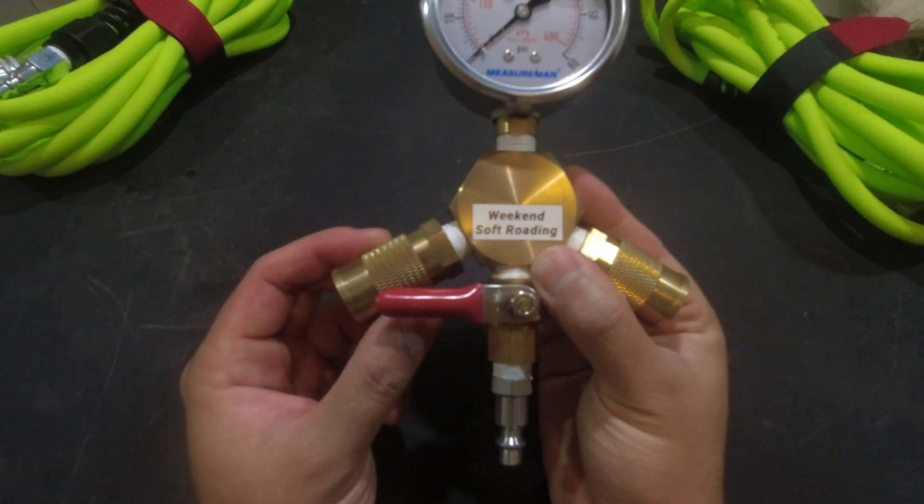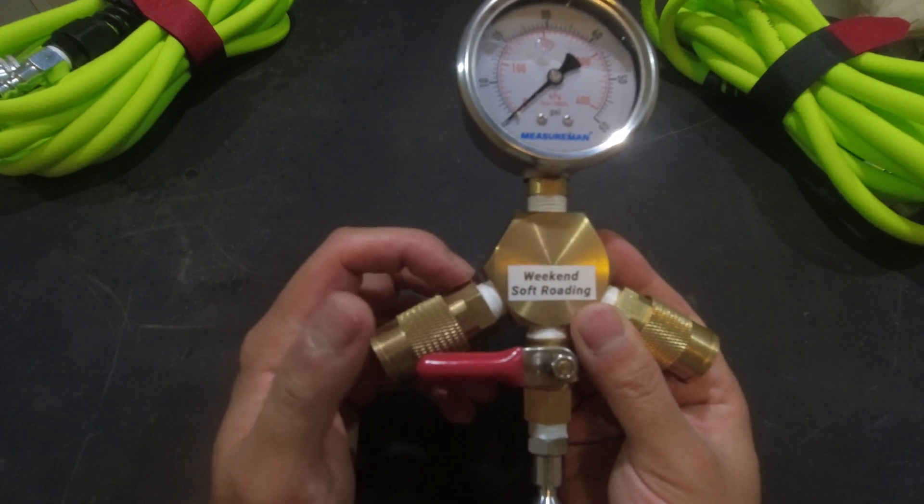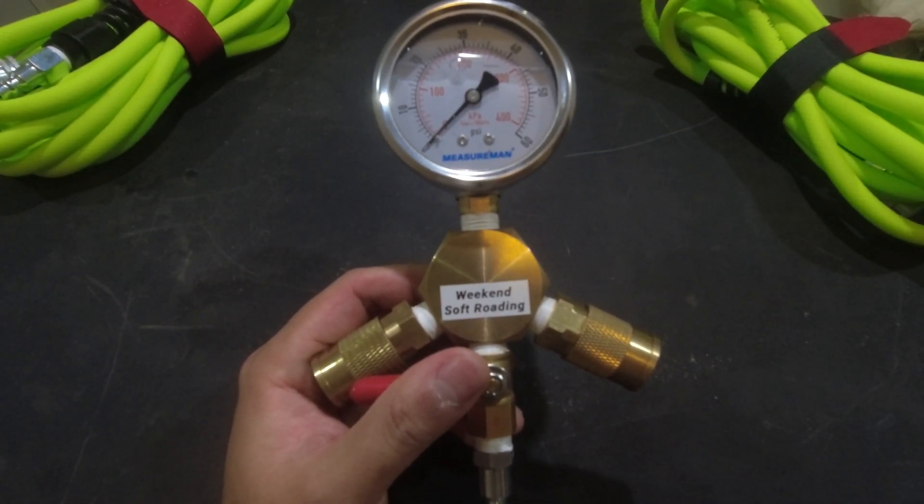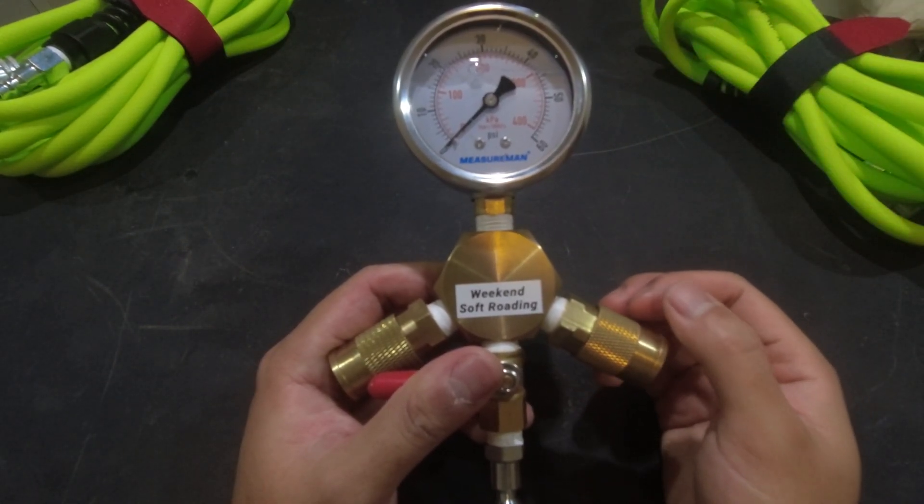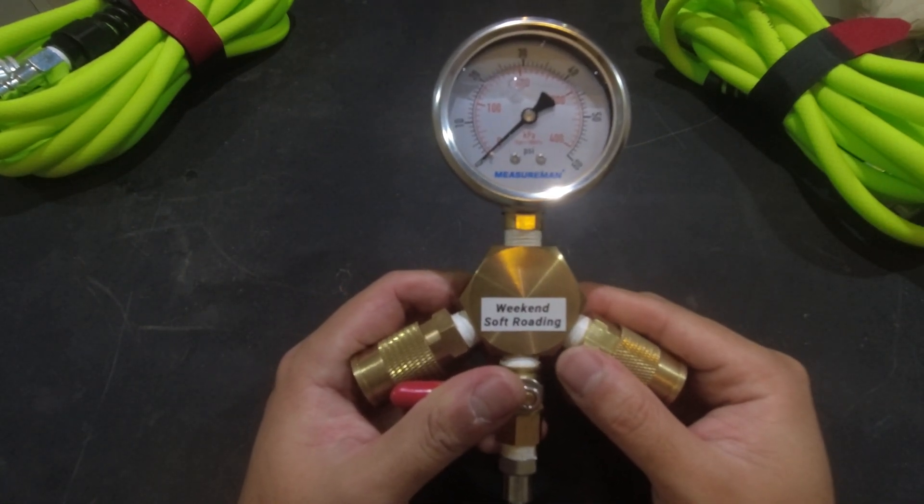There are two couplings, one for the left, one for the right, and then teflon tape for all the fittings. Make sure when you're putting on the teflon tape that you're putting it in the direction of the thread so when you're putting it in it doesn't unwind. You want everything to be airtight.